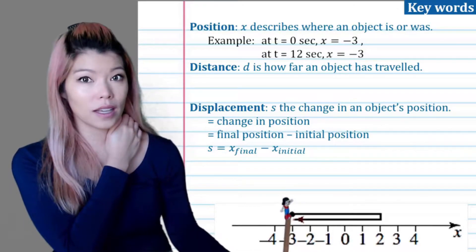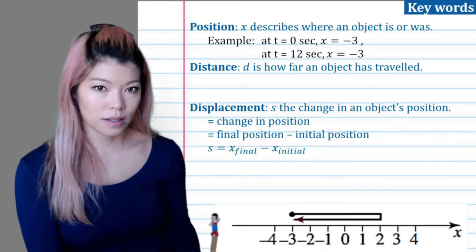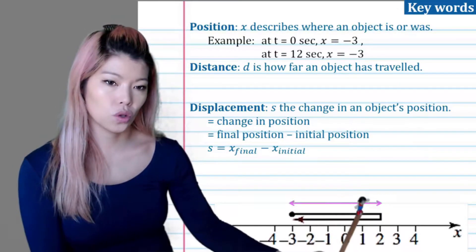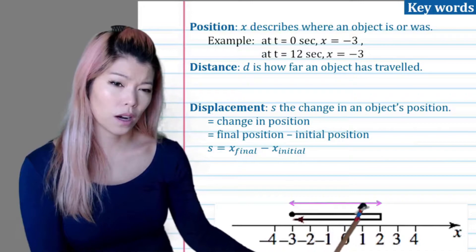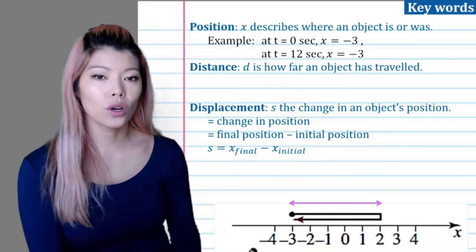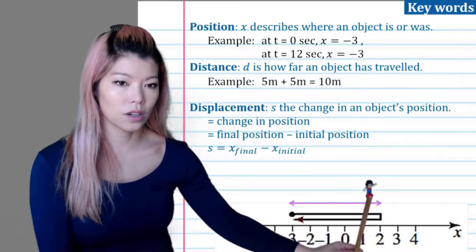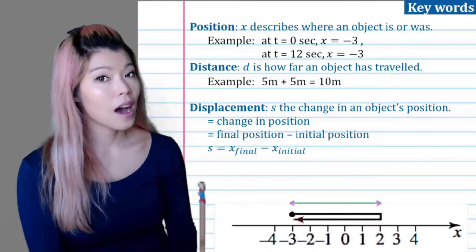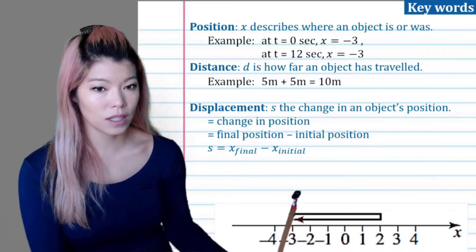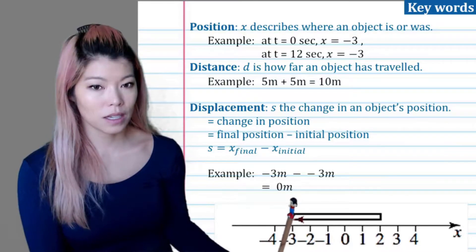So at x equals negative three. If we ask what her position is at t equals three seconds, we'd say zero — that's where she is. Whereas the distance is how far she's traveled: from negative three to two is five steps that way, and she's gone five back, so the total distance is five plus five, or ten meters. However, the displacement is how far she is from the start — she started here and came back here, so she is zero away from the start, so the displacement is zero.